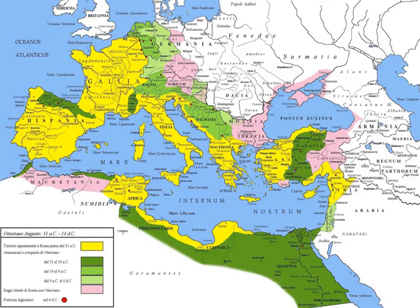197 BC: Hispania Citerior, along the east coast of the Iberian Peninsula, part of the territories taken over from the Carthaginians. 197 BC: Hispania Ulterior, along the southern coast of the Iberian Peninsula, part of the territories taken over from the Carthaginians in the Second Punic War. 147 BC: Macedonia in mainland Greece, annexed after a rebellion by the Achaean League. 146 BC: Africa, home territory of Carthage, annexed after the destruction of Carthage in the Third Punic War.